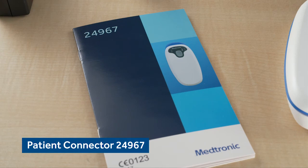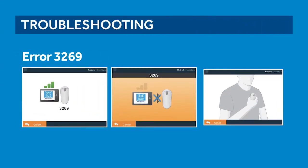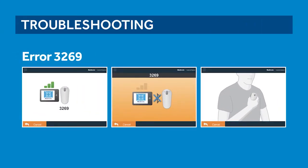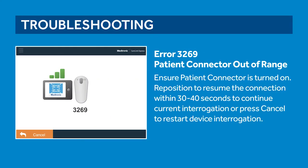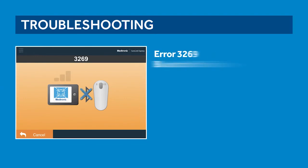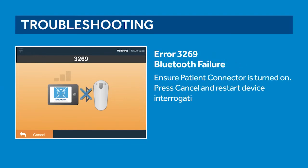The app will alert you if there is an error. The most common error you might encounter is error code 3269. Three possible scenarios with this code include: patient connector out of range. To correct this error, ensure the patient connector is turned on. Bring the mobile tablet closer to the connector and resume the connection within 30 to 40 seconds to continue the current interrogation, or press cancel to restart the device interrogation. Error 3269 could also mean an interruption of the Bluetooth connection where all retry attempts to reestablish connection have been exhausted.